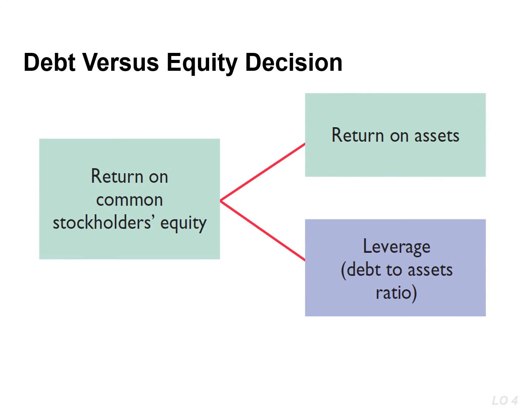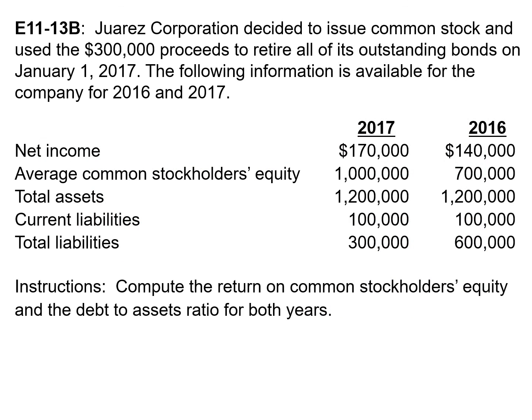This slide shows that the return on common stockholders' equity is affected by the return on assets and the amount of leverage the company uses. If a company wants to increase its return on common stockholders' equity, it can either increase its return on assets or increase its reliance on debt financing. The solution to this exercise will be provided in another document.